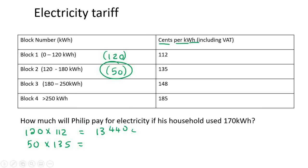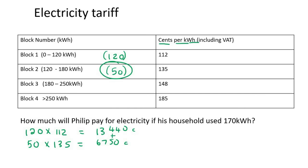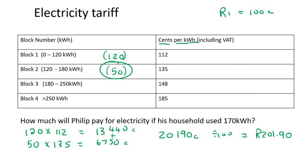Adding 13,440 and 6,750 together gives 20,190 cents. To convert to rand, remember that 100 cents equals 1 rand, so we divide by 100. That gives us 201 rand and 90 cents. When it shows just .9 on your account letter, always write it as 0.90. So that is how much Philip will pay.